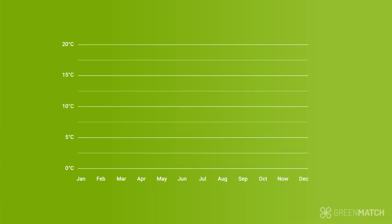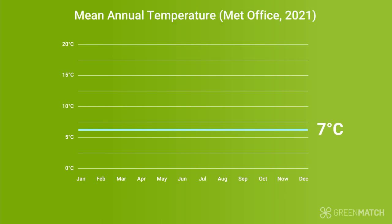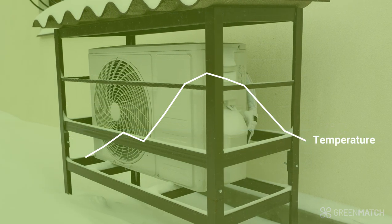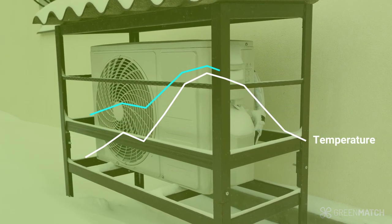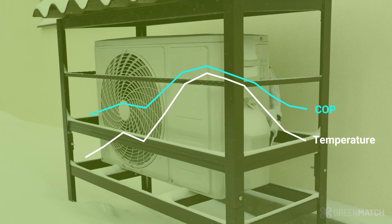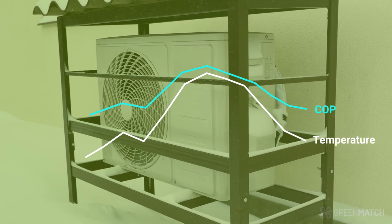Most air source heat pumps will run efficiently at temperatures as low as 7 degrees C. But Met Office data has previously shown that the average UK temperature from November to March is consistently below 7 degrees. In these winter months, it is likely that a heat pump's coefficient of performance would be slightly lower, depending on how cold it gets.